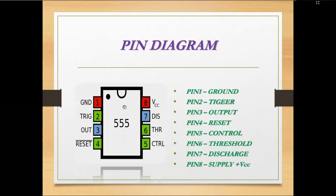This is a pin diagram of the 555 IC. It is an 8-pin DIP IC. Pin 1 is the ground pin, pin 2 is the trigger pin, pin 3 is the output pin, pin 4 is the reset pin, pin 5 is the control voltage pin, pin 6 is the threshold pin, pin 7 is the discharge pin, and pin 8 is the power supply.